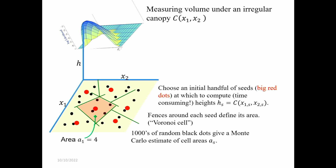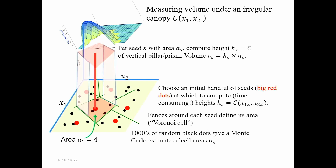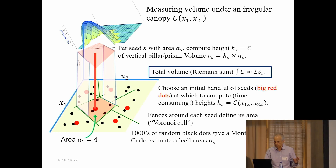Somebody told me this way of tessellating is called Voronoi cells. For each red dot I calculate the height using function C, multiply height by area to get volume, and add up the volumes for all areas to get my integral — approximately. If the areas were very small I'd have it more accurately. That's a Monte Carlo estimate of first the area, and then the prism. There's a word — Riemann sum — for this kind of method of doing numeric integration.